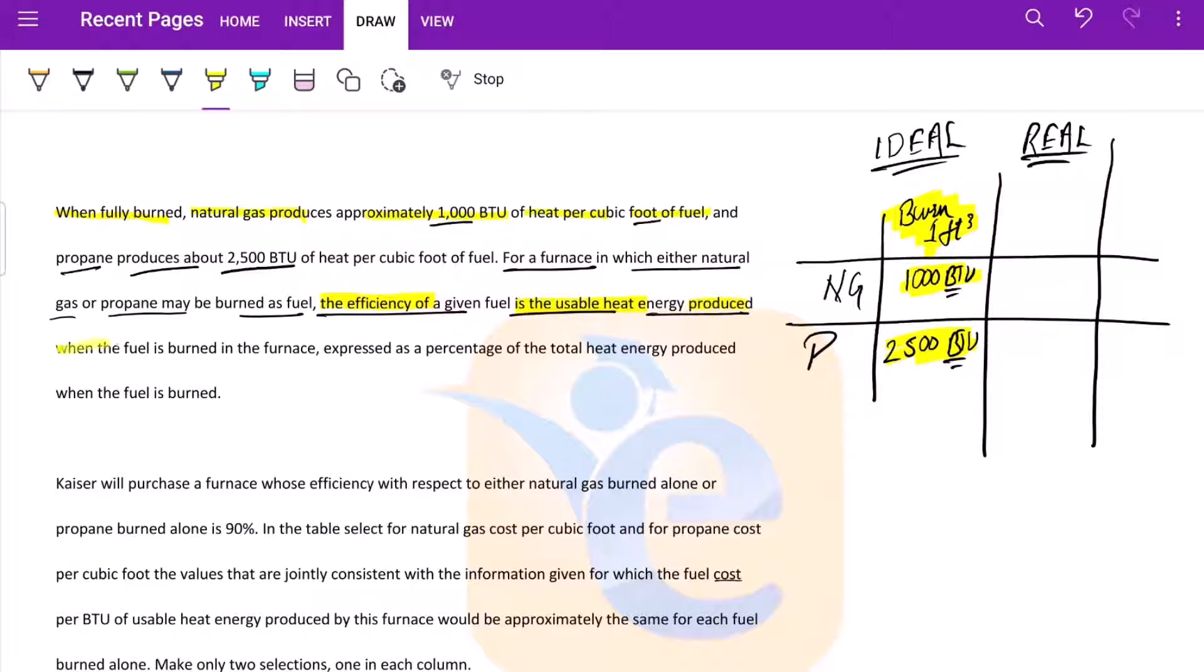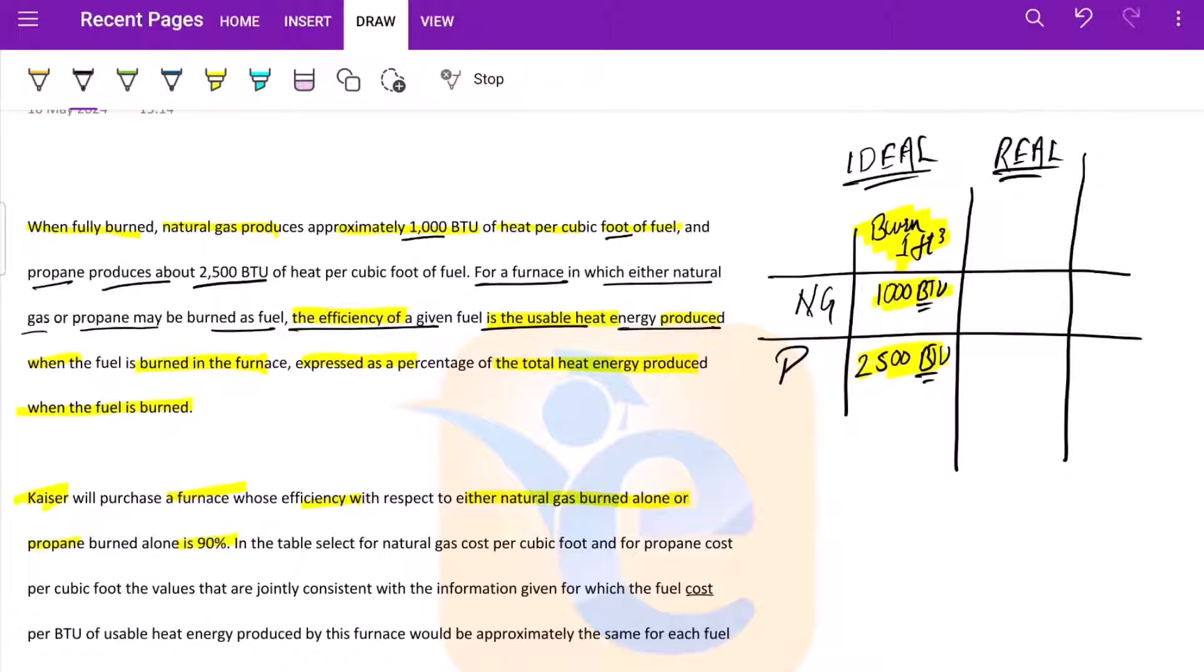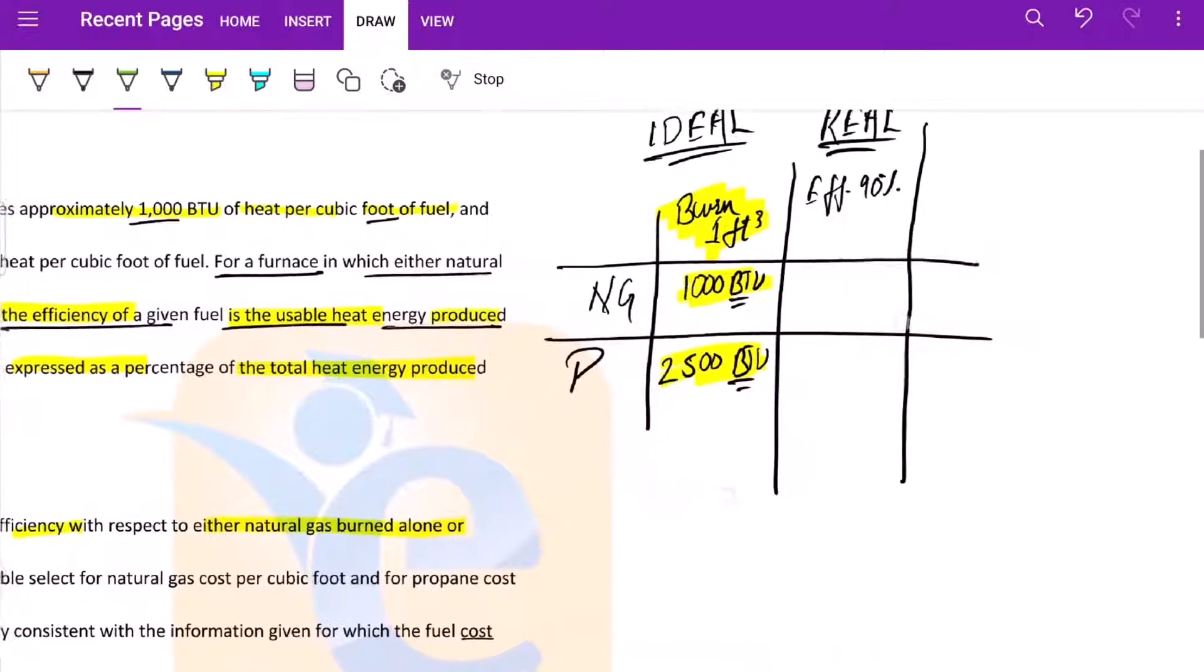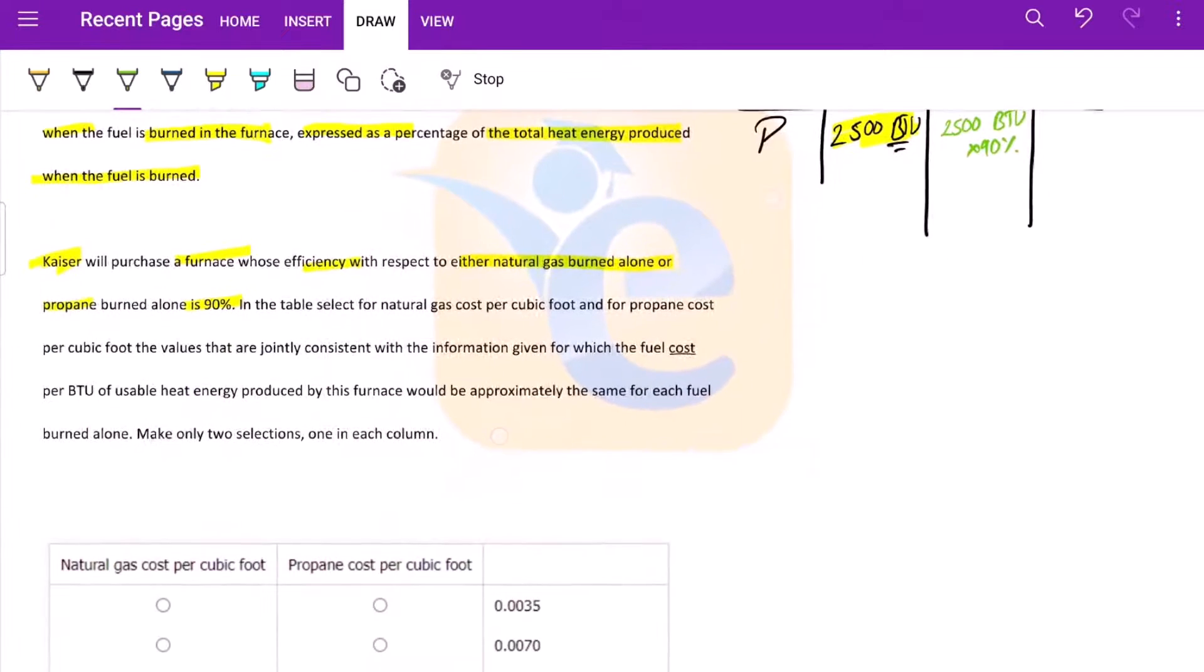When the fuel is burned in the furnace, expressed as percentage of total heat energy produced when the fuel is burned. Now Kaiser will purchase a furnace whose efficiency with respect to either natural gas or propane would be 90%. So the efficiency here is 90%. Say if we burn a cubic foot of fuel, the energy produced would be 1000 BTU into 90%, or here it would be 2500 BTU into 90%. In the table, select for natural gas cost per cubic foot and for propane cost per cubic foot the values that are jointly consistent with the information.